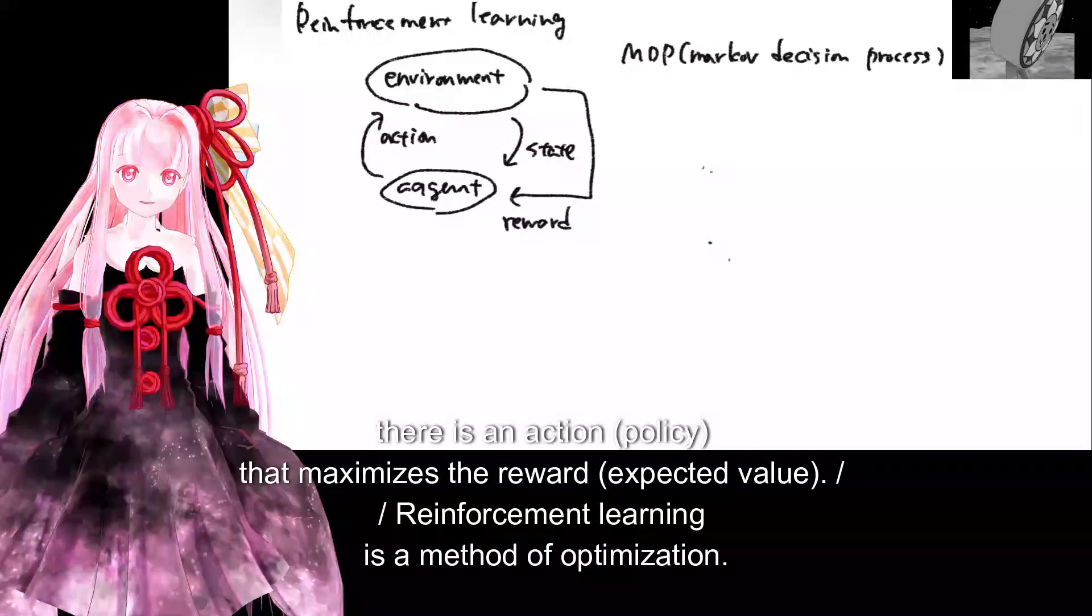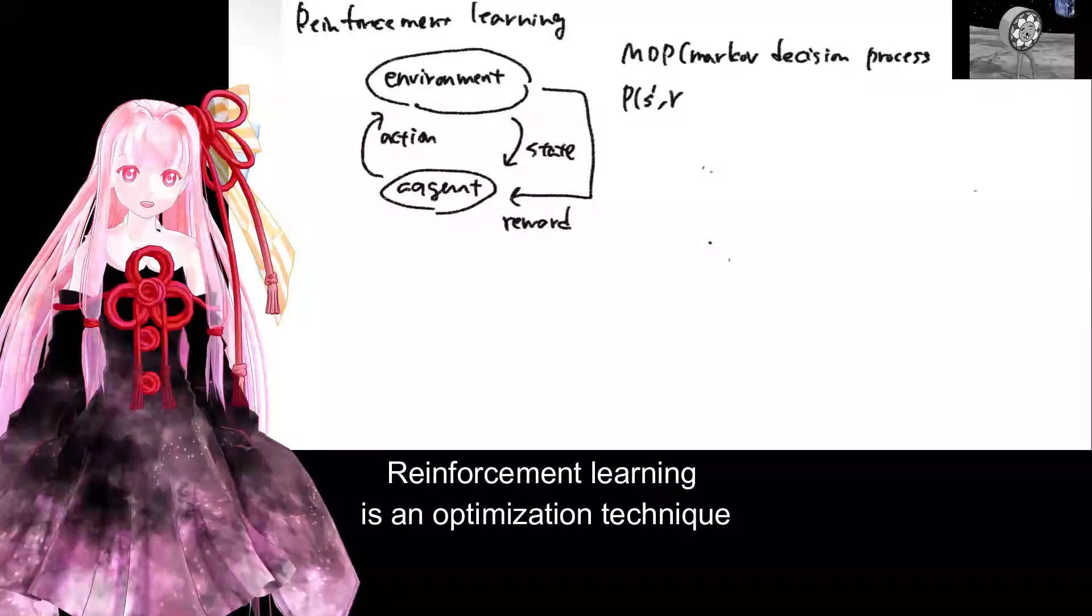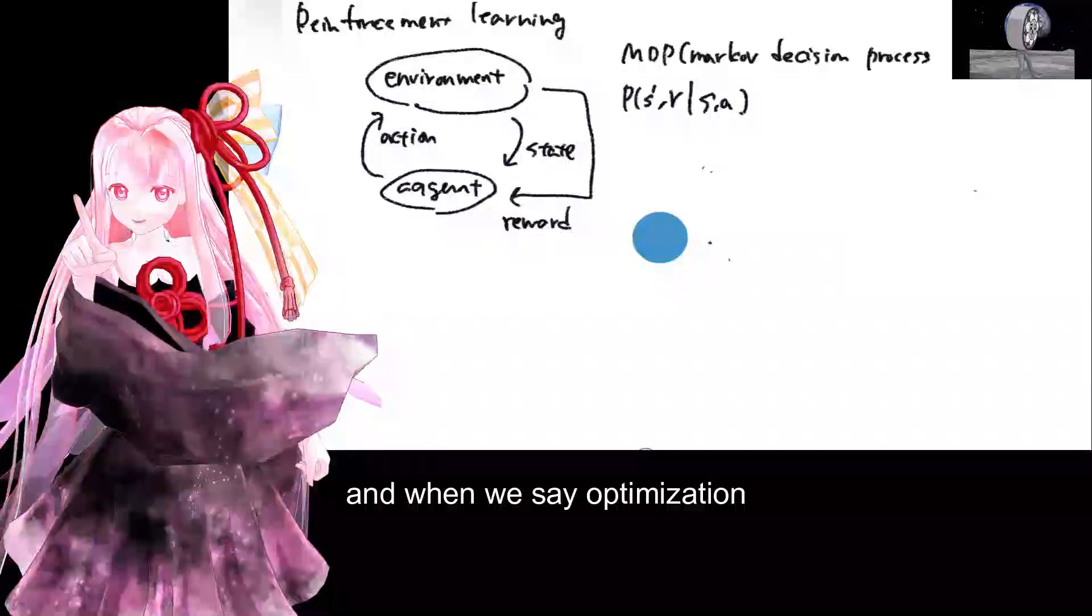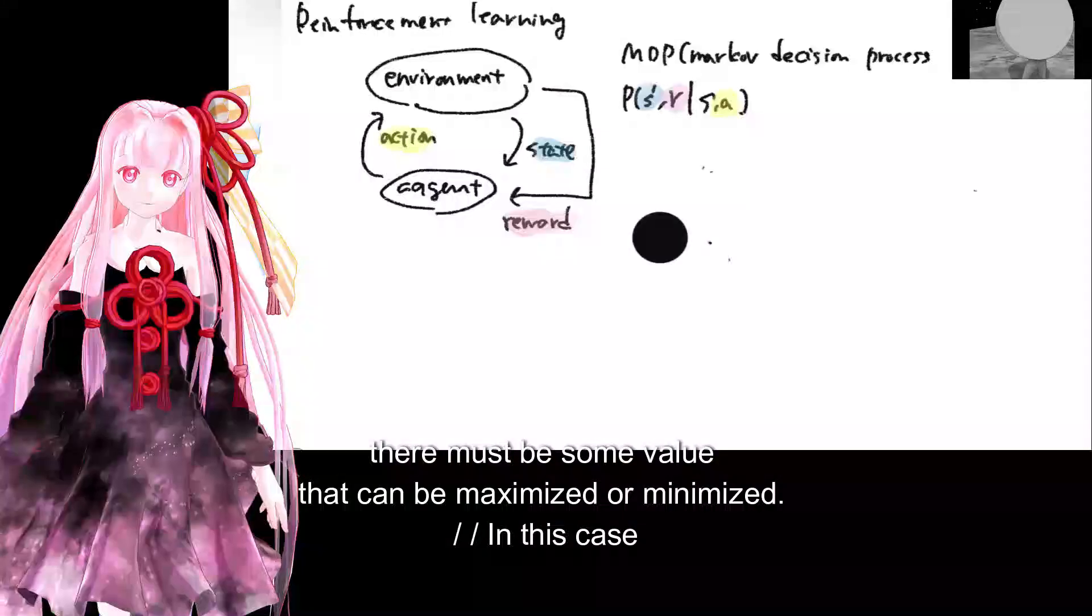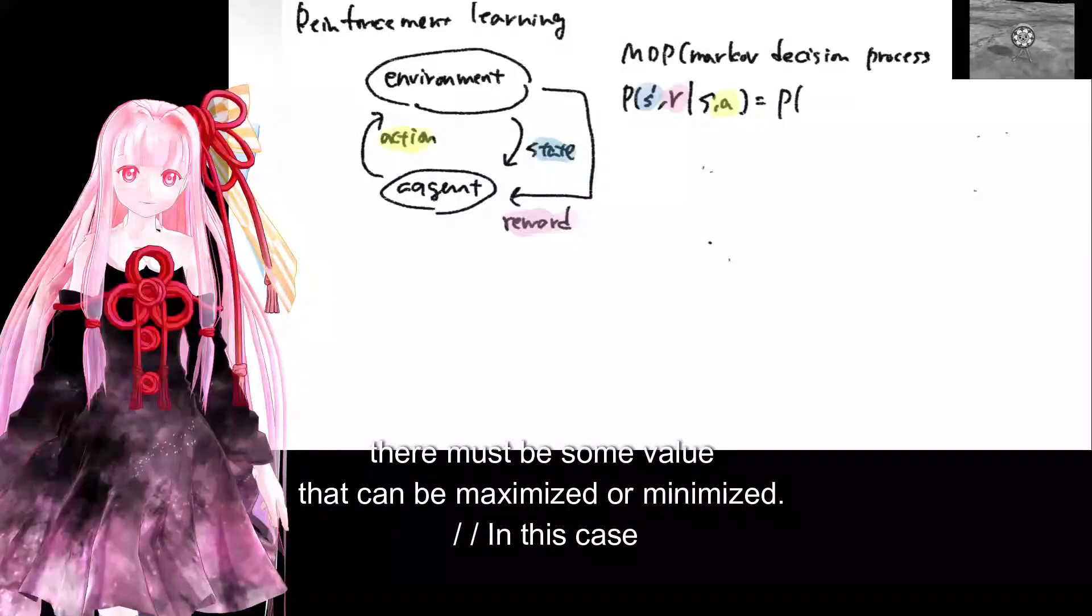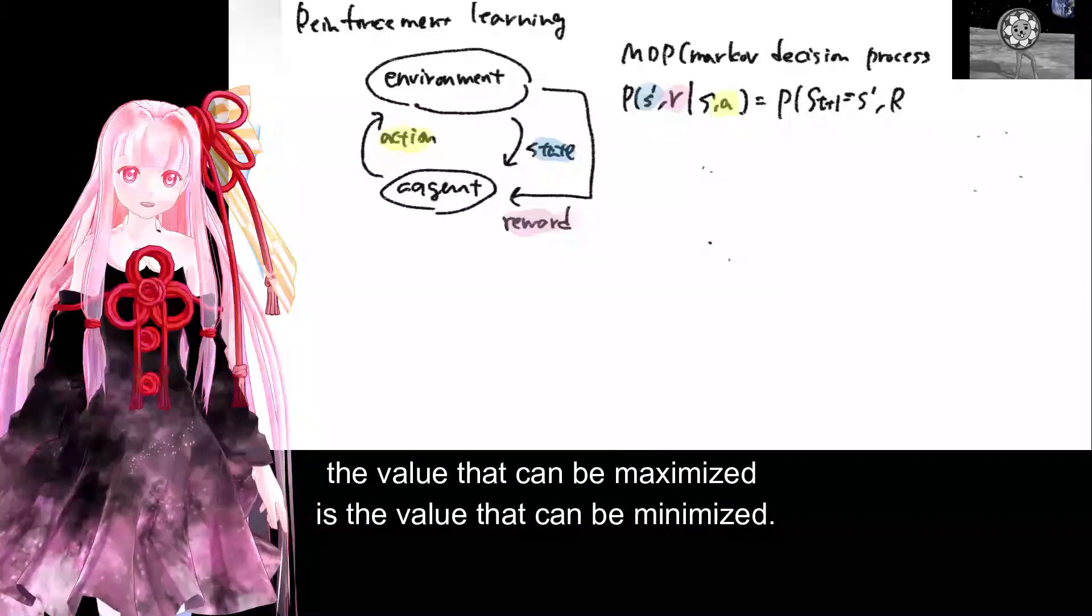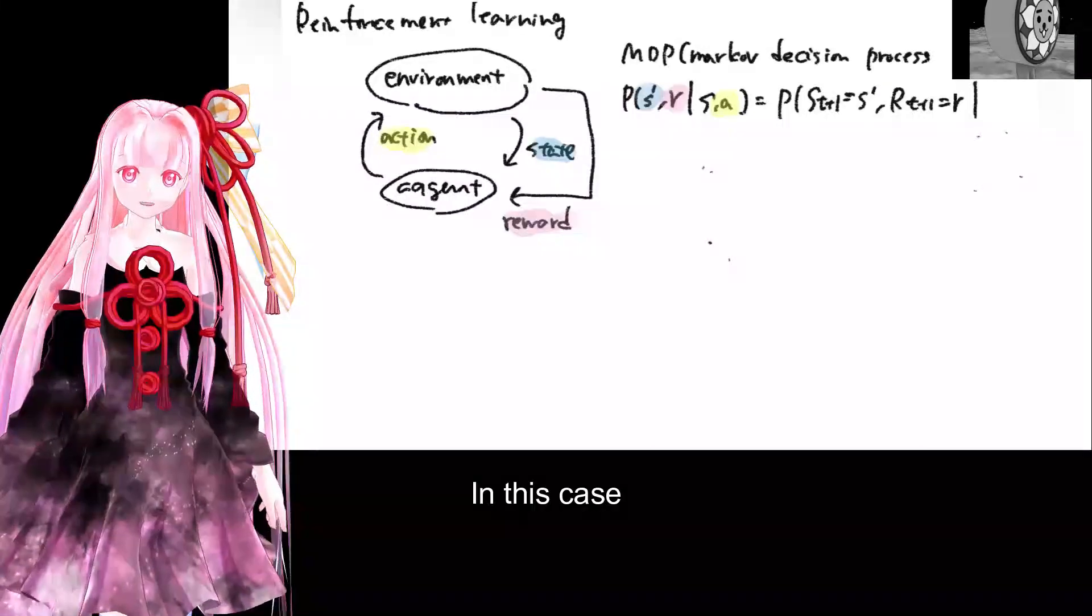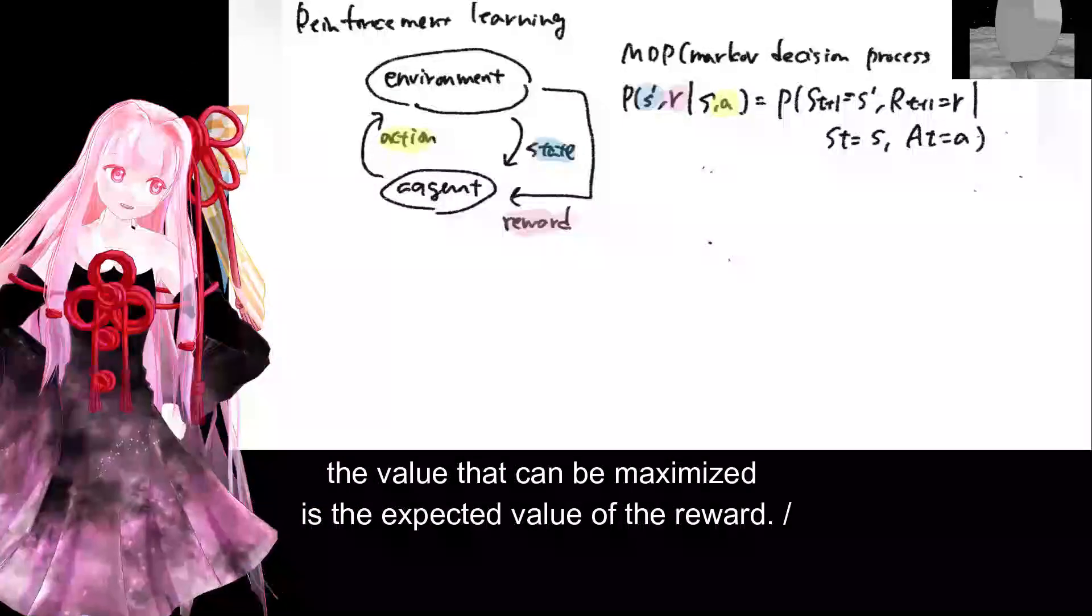Reinforcement Learning is an optimization technique. And when we say optimization, there must be some value that can be maximized or minimized. In this case, the value that can be maximized is the expected value of the reward.